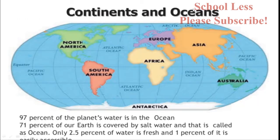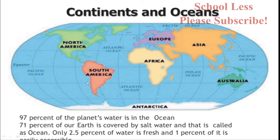Next, continents and oceans. On the map, blue color is water. Earth is covered 71% by salt water and that is called the ocean. So 71% of Earth is water. 97% of the planet's water is in the ocean. Only 2.5% of water is fresh, and only 1% of it is easily accessible.